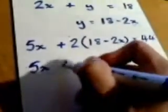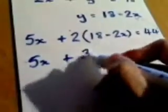So once again we've got 5x. We're now going to expand the brackets so we get 36 take away 4x that equals 44.